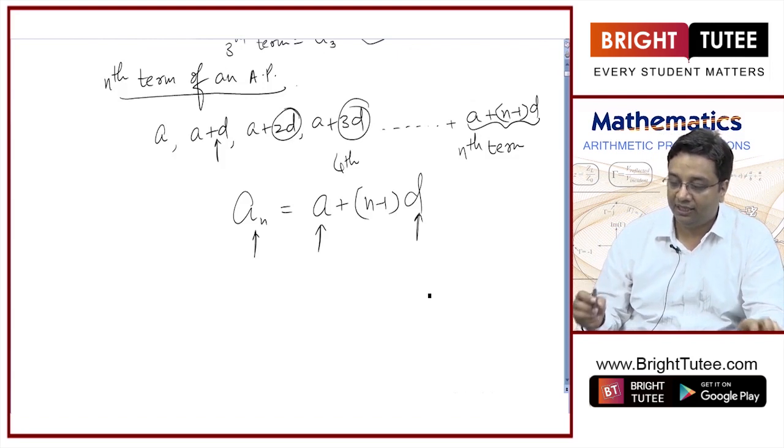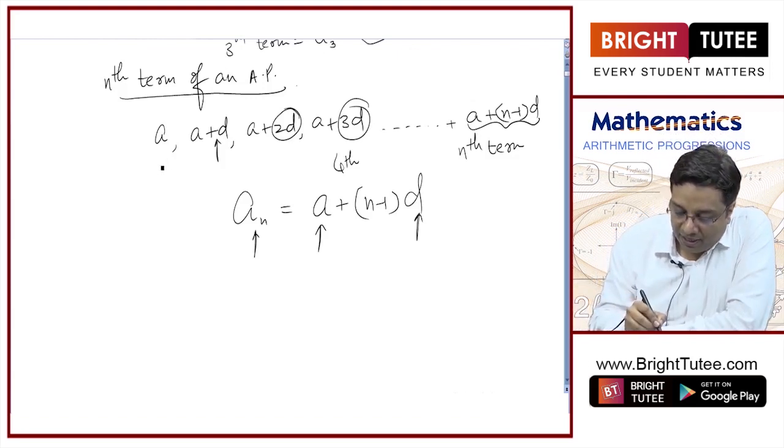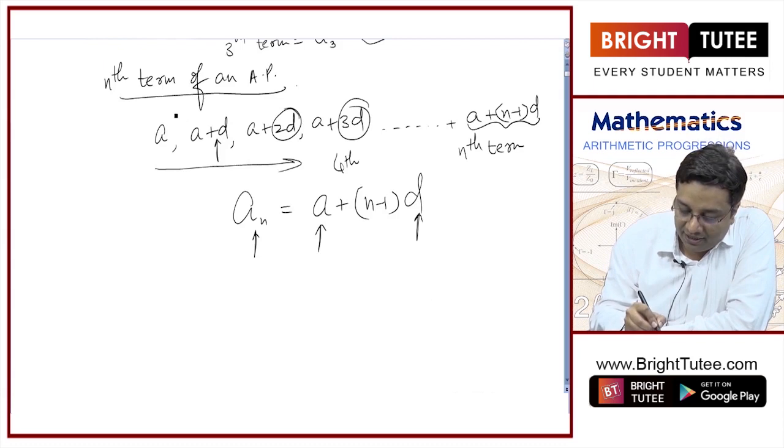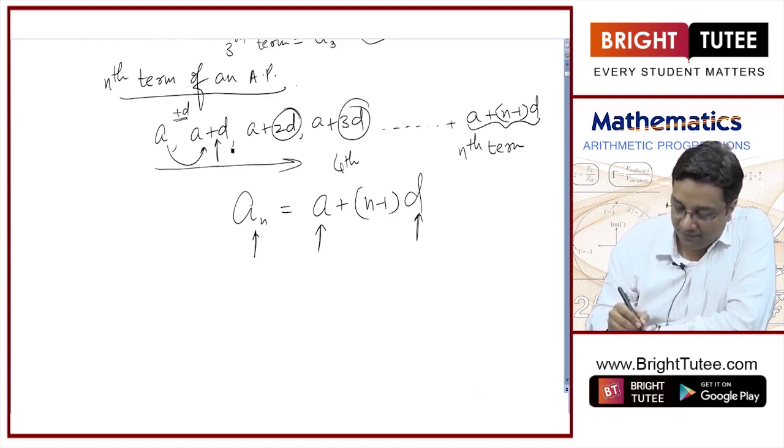what you have to understand is that when I am going from left to right, I am adding D in each term to obtain the next term. How do I obtain next term? By adding D in the previous term.